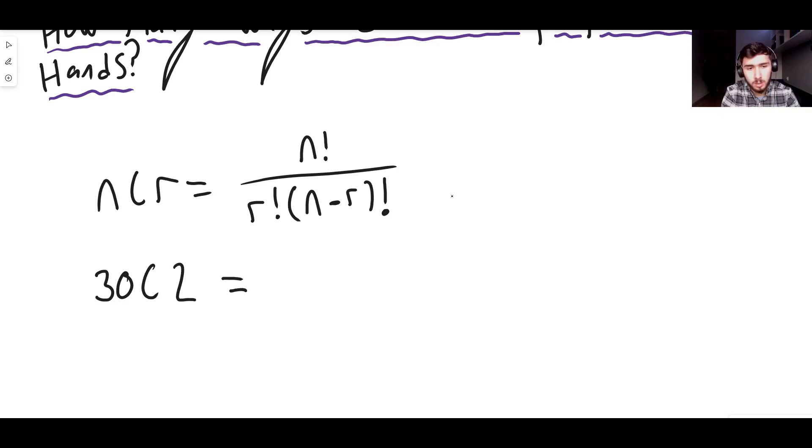What this means is we calculate 30 factorial divided by 2 factorial multiplied by 30 minus 2 factorial. Like this. This is our answer. And we can simplify this a little bit. It's 30 factorial divided by, well 2 factorial is just 2, and 30 minus 2 is 28, so 2 times 28 factorial.